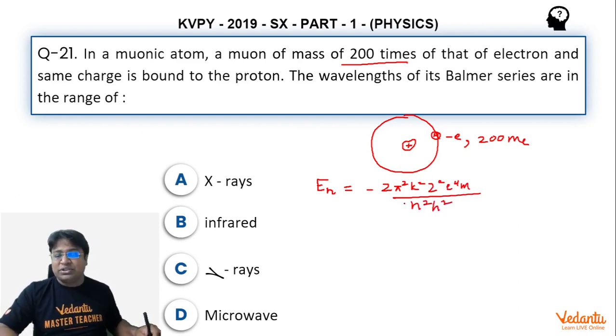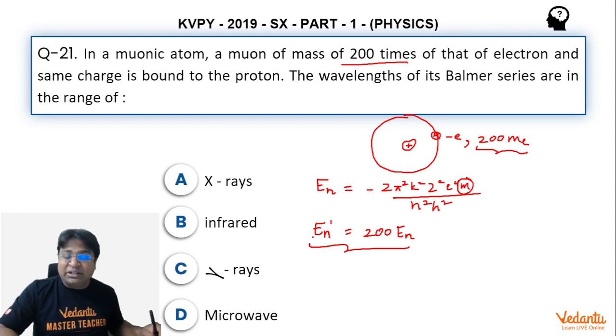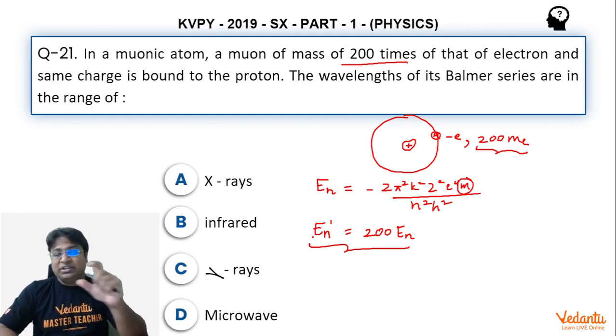The most important point here to note is that this energy is proportional to the mass of electron. Now keeping everything same, if the electron has been replaced by a particle whose mass is 200 times the mass of an electron, then it means that in the new atom the energy of nth orbit will become 200 times the corresponding energy in the normal hydrogen atom. This equation tells us that the difference of any two energy levels will also become 200 times of the corresponding difference in the hydrogen atom.